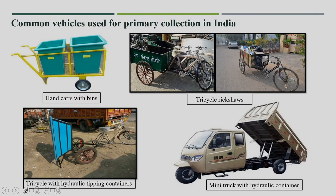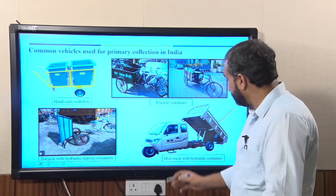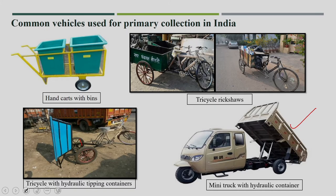Under Swachh Bharat Mission, many cities have started with mini trucks with hydraulic containers, normally called auto-tippers. In cities with auto-tippers, there is no need to dispose into dustbin areas — this kind of vehicle can directly reach the transfer station or treatment facility. The segregated waste collected by auto-tippers goes directly to the treatment facility, and from there, whatever is not recyclable or compostable goes to the disposal site with secondary collection facilities.